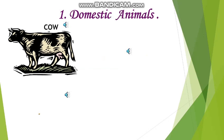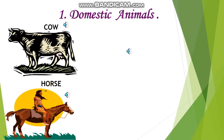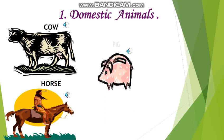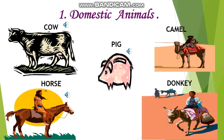Now we will see some examples of domestic animals: cow, horse, pig, camel, and donkey. All these are the domestic animals.